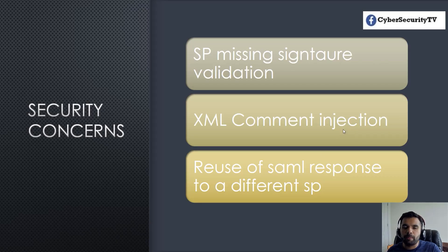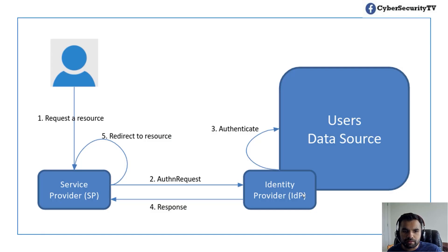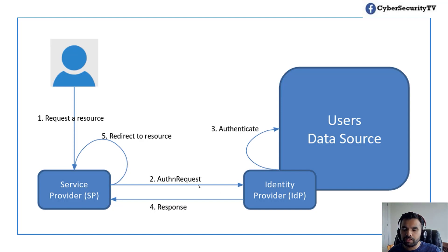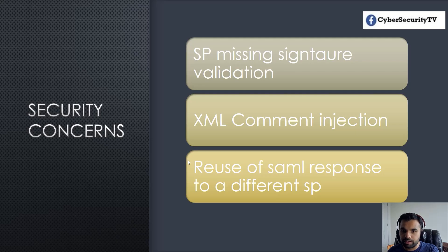The second risk is XML injection. When the auth request and response is going back and forth between service provider and IDP, the assertion — that's why it's called SAML — is made up of XML. If there is a flaw, I can inject malicious XML. Suppose the IDP authenticated me and said this person has user-level access, but if I inject XML in such a way that I get admin-level access, that's privilege escalation. That is another security concern when dealing with SAML.